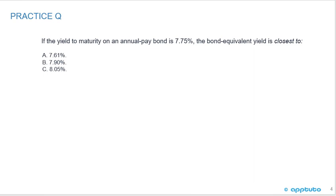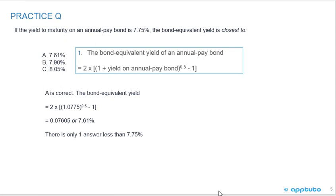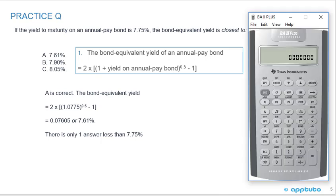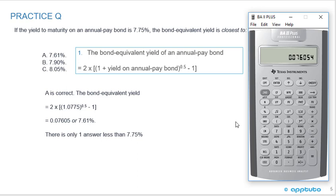Practice question one: if the yield to maturity on an annual pay bond is 7.75%, the bond equivalent yield is closest to A, 7.61%, B, 7.9%, or C, 8.05%. The correct answer is A. Using the calculator: 1.0775, Y to the X, 0.5, equals, minus 1, equals, times 2, equals — giving 0.076054, which is 7.61%. There's only one answer less than 7.75%, which is the expected result.